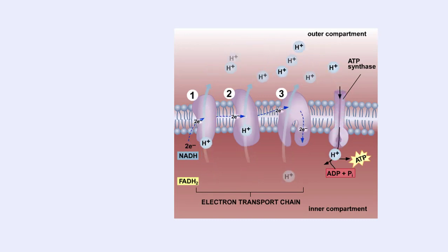These electrons travel downstream through the chain where they give up their energy in discrete steps. Some of this energy is used to pump protons from the mitochondrial matrix across the inner membrane and into the outer compartment.